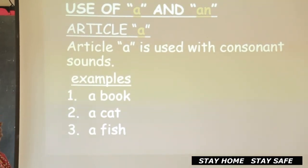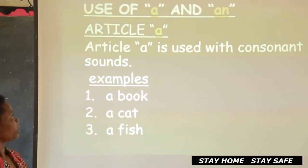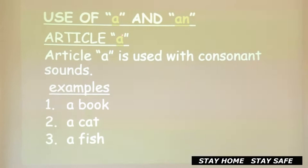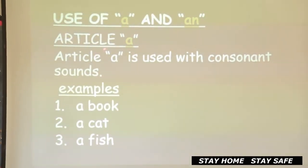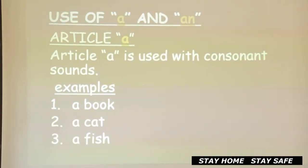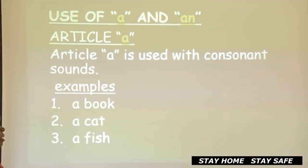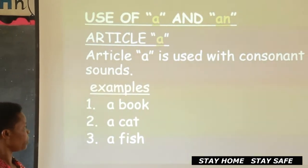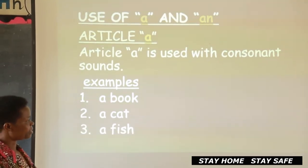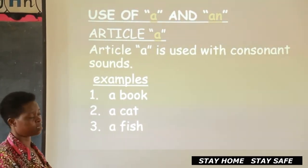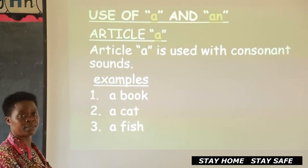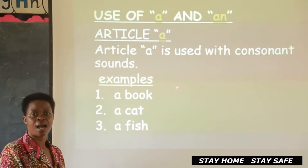Use of A and AN — but we are going to concentrate on article A. Article A is used with consonant sounds. For example, when we look at 'a book': article A is here, and the sound of B is a consonant. So you have to say 'a book' while the starting sound is a consonant. If you have one, you say: I have a book.